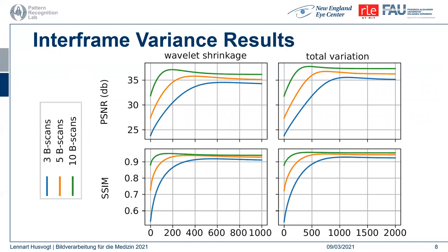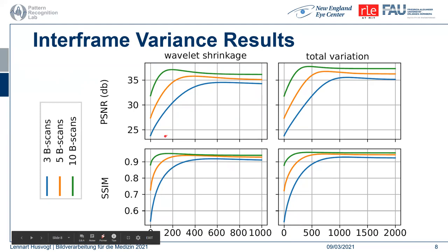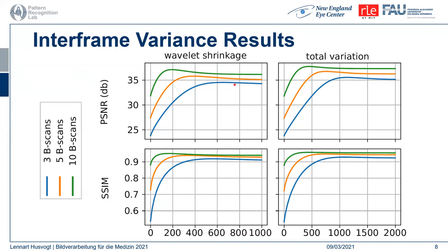This slide shows how structural similarity and peak signal-to-noise ratio change during the reconstruction process. Using more B-scans leads to better results from the beginning, but the difference decreases during reconstruction. The top row shows PSNR in decibels; the lower row shows structural similarity. The left half shows wavelet shrinkage; the right side shows total variation. We can see that over the reconstruction iterations, PSNR and structural similarity increase. The fact that we can get into similar ranges is important because if fewer B-scans are needed, imaging times will be shorter, making imaging of patients easier since patients may have difficulty fixating or are older with worse eyesight.